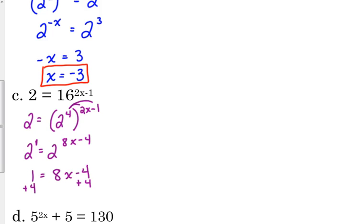So we add 4 to both sides. We get 5 is equal to 8x. Divide by 8. 5 over 8 is equal to x.